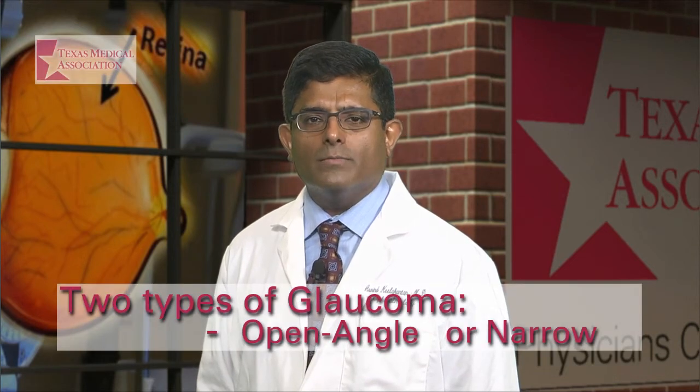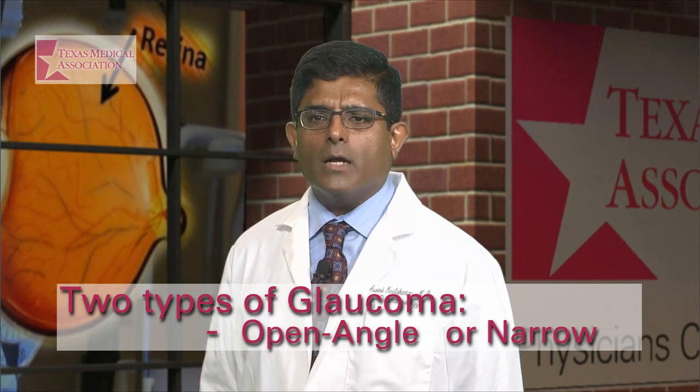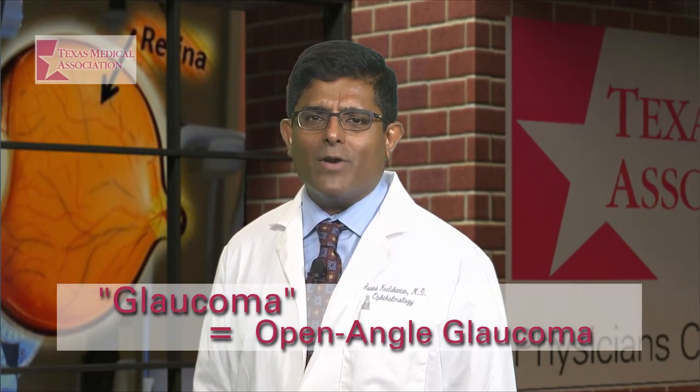In general, there are two types of glaucoma: open-angle glaucoma and narrow or closed-angle glaucoma. In this video, we'll cover open-angle glaucoma, which is more common in the United States. I will describe how open-angle glaucoma can affect your eyes and how to prevent this condition from impairing your vision. From now on, when I say glaucoma, I'm referring to open-angle glaucoma.